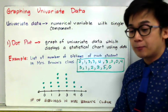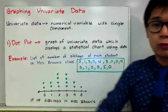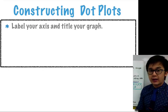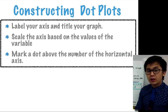Now let's have another example on how we can construct dot plot. Once again in constructing dot plots you need to remember that you need to label your axis and you need to put a title on your graph. And the second one you need to scale the axis based on the values of the variable and mark a dot above the number on the horizontal axis that you are using.